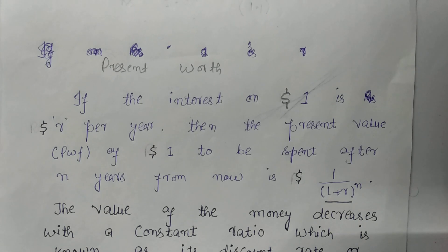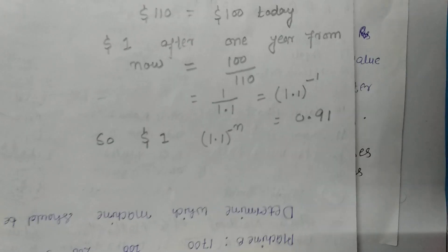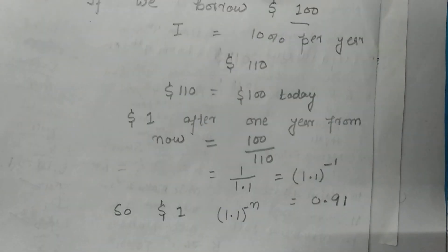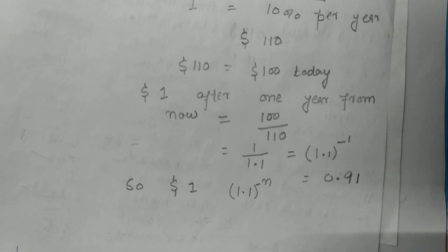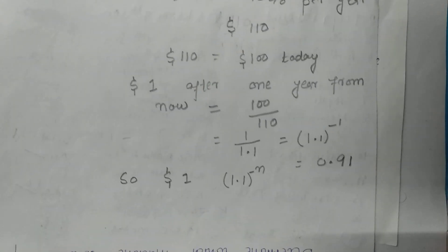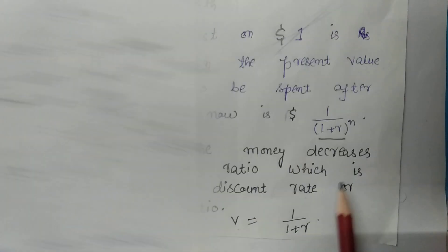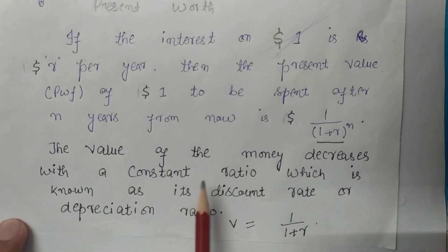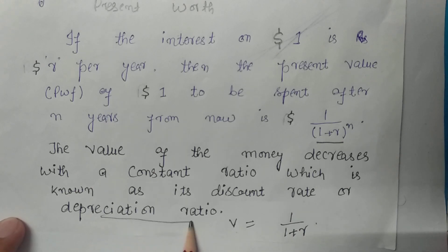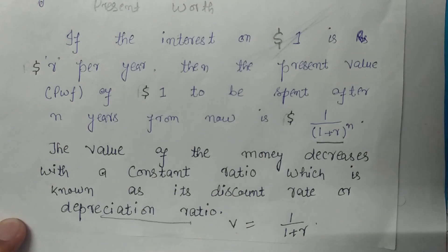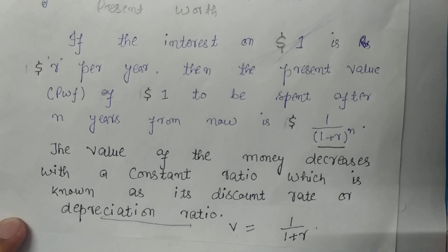Where r is the interest rate per year and n is the number of years. As we have seen, the value of money decreases at a constant rate. Today the value of 1 dollar is 1, and after 1 year it will become 0.91 dollars. So the value of money decreases with a constant ratio which is known as its discount rate or depreciation ratio, that is v equals 1 upon (1 plus r). This is the depreciation ratio after 1 year.